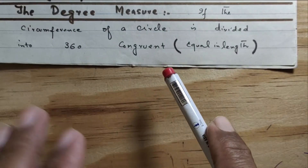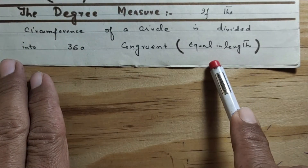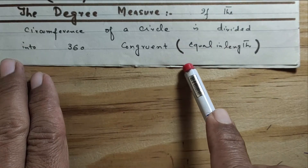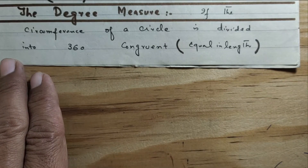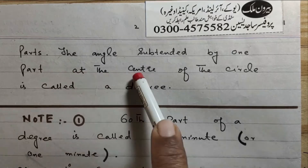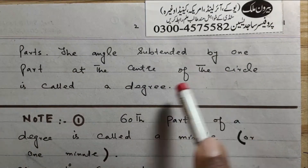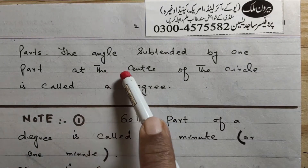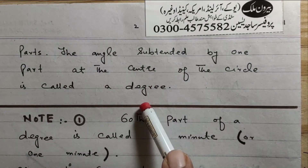The degree measure: if the circumference of a circle is divided into 360 equal, congruent parts, the angle subtended by one part at the center of the circle is called one degree.